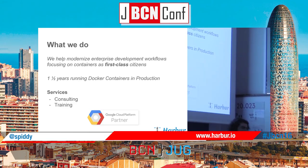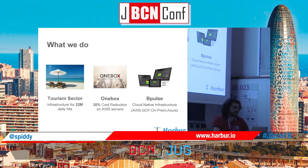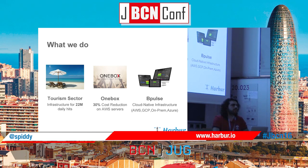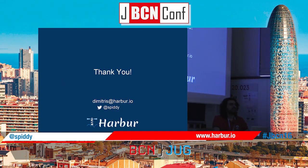At Harbo, we modernize these kinds of workflows and use containers as first-class citizens — we've been running containers in production for one and a half years. Our services include consulting and training, and we are partners of Google Cloud Platform. Some use cases: in the tourism sector we have an infrastructure running 22 million hits daily. For Onebox, the objective is a 30% cost reduction on Amazon services using cloud-native infrastructure with Kubernetes, enabling deployment across different cloud providers. We also open-source our own tools and like to give back to the community.